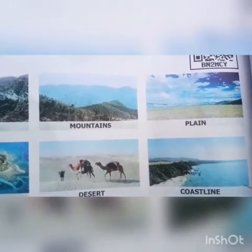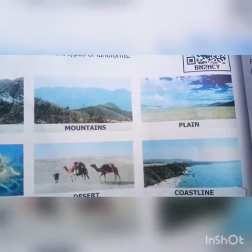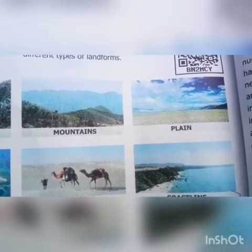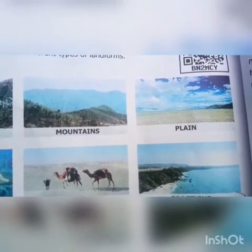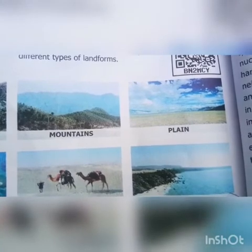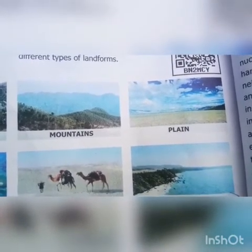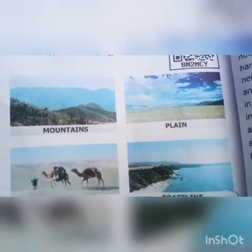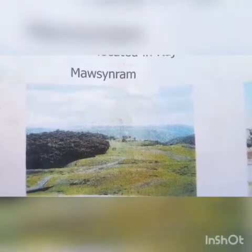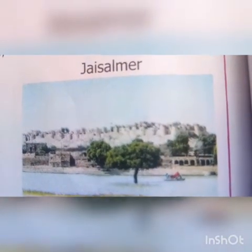Diversity in landforms also impacts the flora and fauna of a region. The plant and animal wealth of a place depends upon the natural habitat and the climate that prevails in that region. Food, clothing, occupation, and living conditions of the people are closely connected with the region's natural surroundings and climate. Interestingly, Mizoram, located in Meghalaya, is the land of highest rainfall, while Jaisalmer, located in Rajasthan, is the land of lowest rainfall.